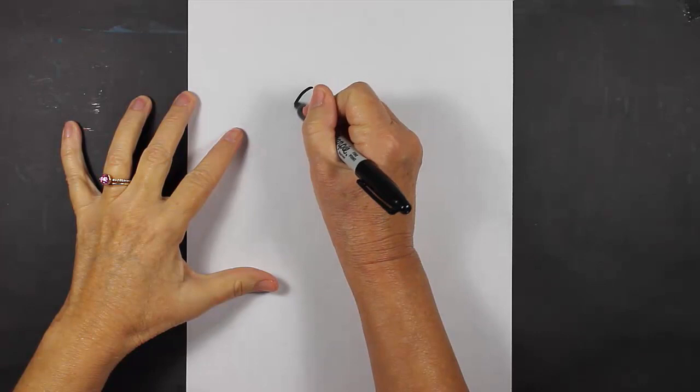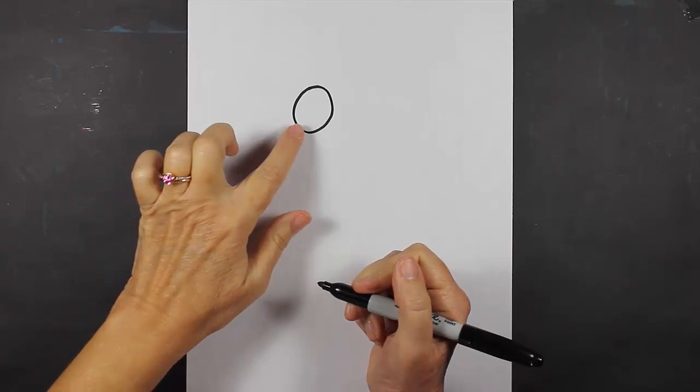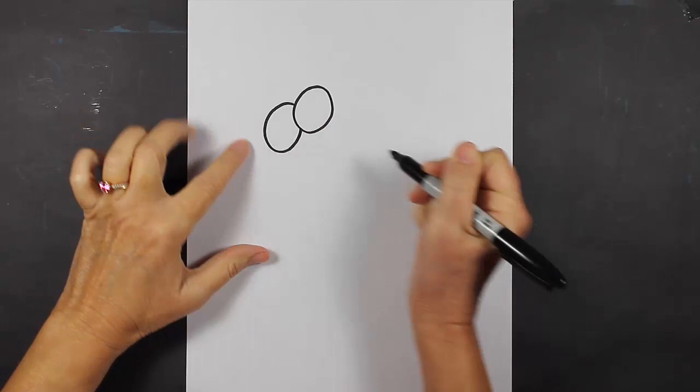The first thing you'll want to do is make three small circles. So there's circle number one. Now the next circle is going to be going a little bit behind the initial circle, so you're going to make it not complete and it's going to run right into the first circle.